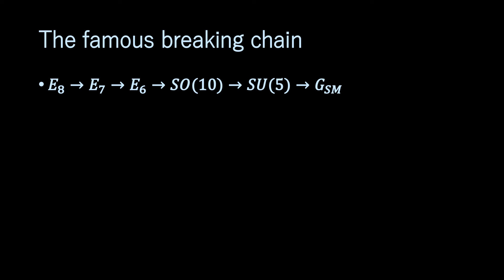However, since all representations of E8 and E7 are real and cannot lead to 4D chiral fermions, this is necessarily outside the 4D GUT framework.